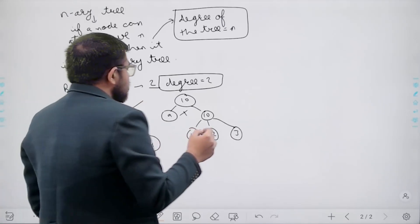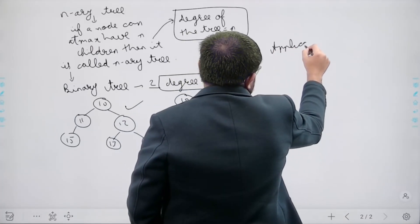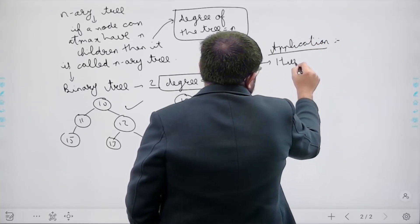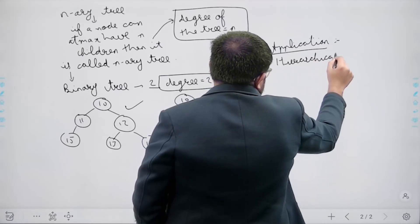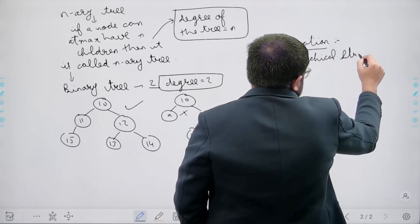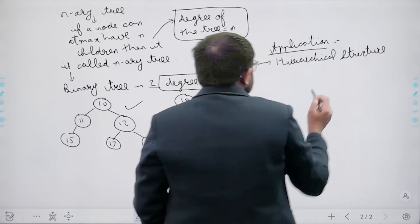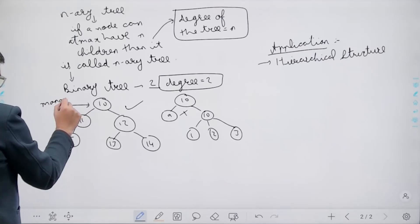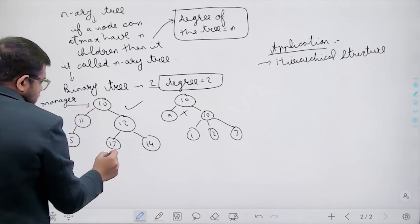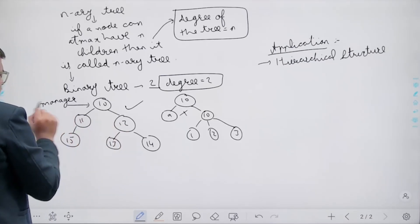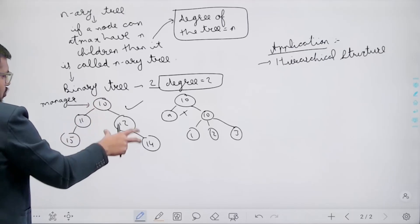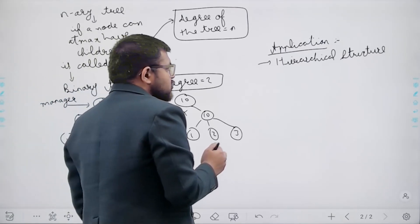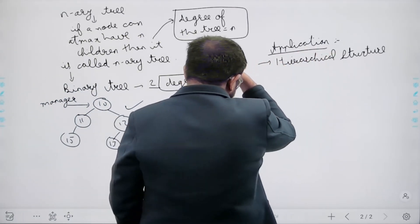A basic application of trees is to store hierarchical structures. For example, a manager has two people directly reporting to them, each of whom may have further reports — this forms a hierarchical structure, which can be naturally represented as a tree. This is a common application of trees.